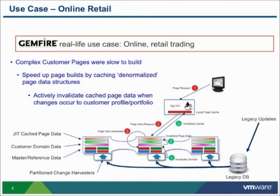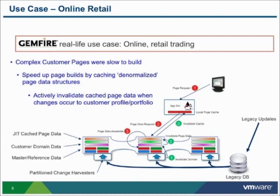Looking at the diagram, we see the web browser making a request to the app server for a page. The app server would then come down to GemFire and say, give me the specialized object for that page. If it didn't exist or hadn't been built before, code would run inside GemFire — one of the key capabilities is that you can execute behavior inside the database so it runs very quickly. That code would build the denormalized view from the customer domain data and master reference data, assembling the specialized object as requested. It would then cache it both at the server level and at the app server level, so if the customer came back to that page and nothing had changed, they would already have that object built and get an even faster experience.